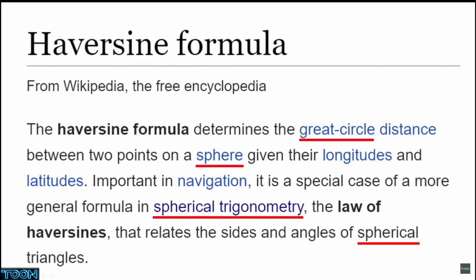Alright, the Haversine formula determines the great circle distance between two points on a sphere, given their longitudes and latitudes. Important in navigation, it is a special case of a more general formula in spherical trigonometry, the law of Haversines, that relates the sides and angles of spherical triangles.